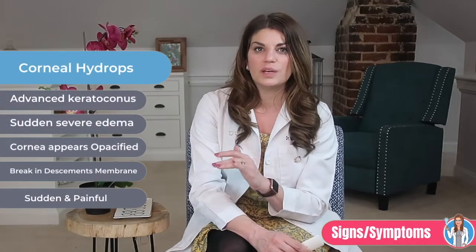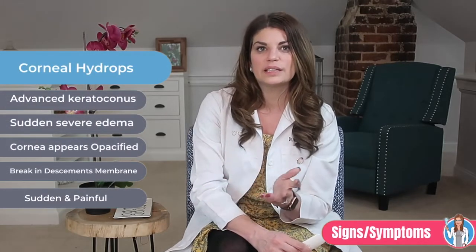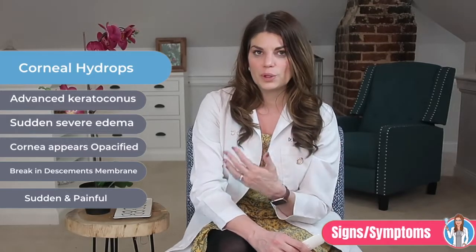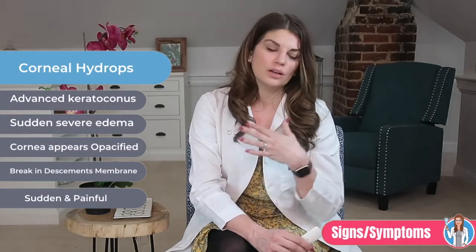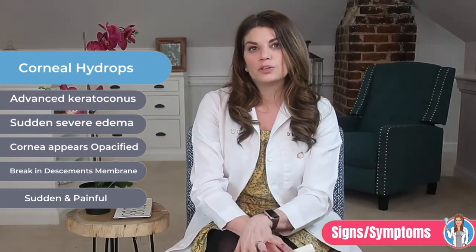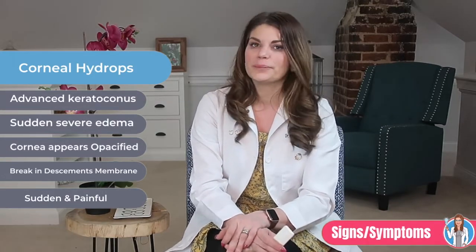Keratoconus usually takes years to go from early to late stage, but for some people it can get worse very quickly. The cornea can swell suddenly and start to scar, and when the cornea has scar tissue it loses its smoothness and becomes less clear, making vision even more distorted and blurry. That process of it getting much worse very quickly is called corneal hydrops.